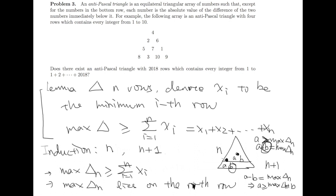As we assume x_{n+1} is the minimum on the n+1 row, b is larger than x_{n+1}. This means a is larger than the sum of x_i plus x_{n+1}, which proves the lemma.